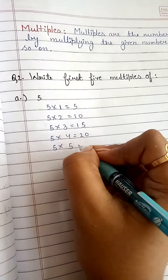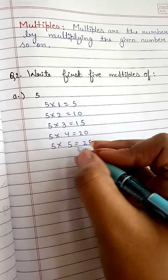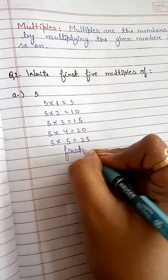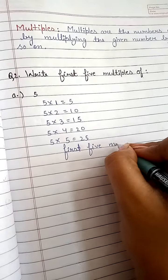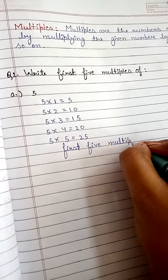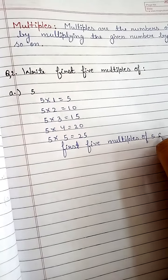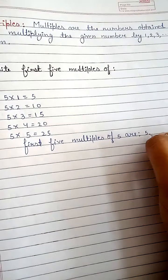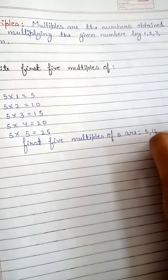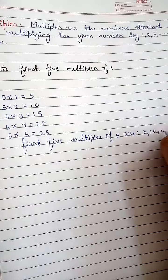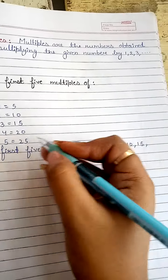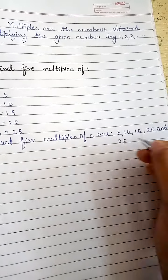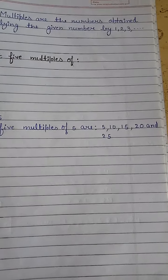Five multiplied by four is twenty, and five multiplied by five is twenty-five. So the first five multiples of five are: five, ten, fifteen, twenty, and twenty-five. It is easy, isn't it?